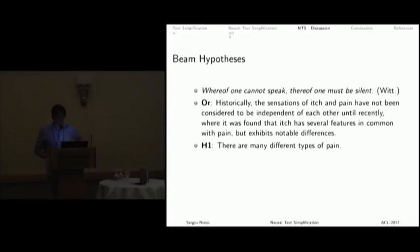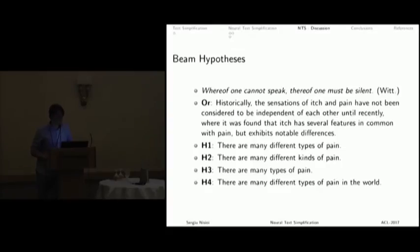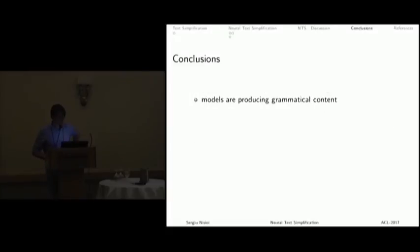Here is a sentence that has not necessarily a good output. The whole sentence has much more content, and there are many different types of pain. The first hypothesis: there are many different types of pain. The second one is the same. The third: there are many different kinds of pain. The fourth hypothesis: there are many different types of pain in the world.